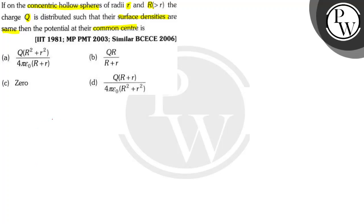First we'll draw the concentric circles. Radius for this is small r and this is capital R. Charge, let's be Q1 and Q2 here. Q equals Q1 plus Q2.